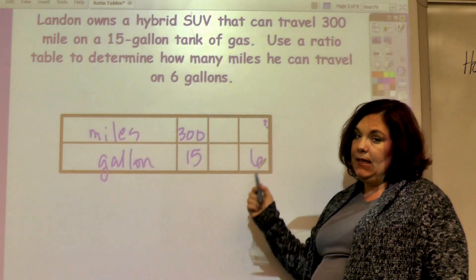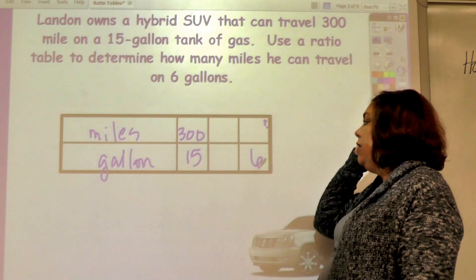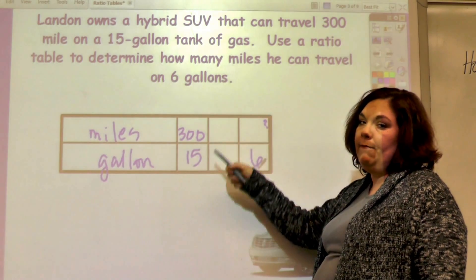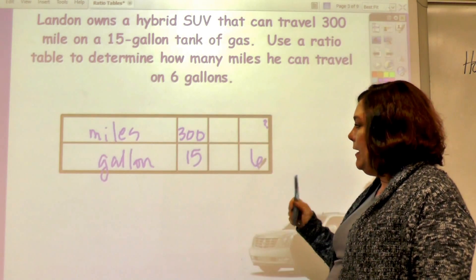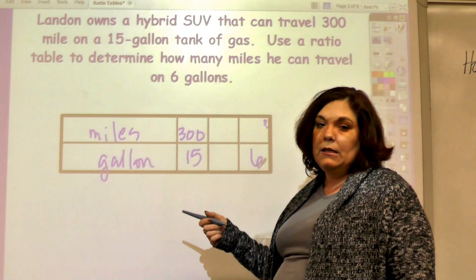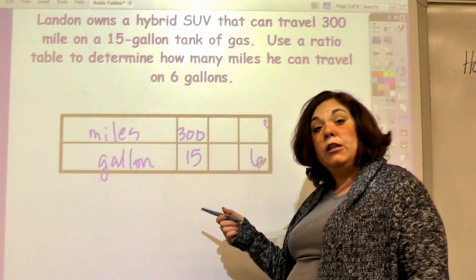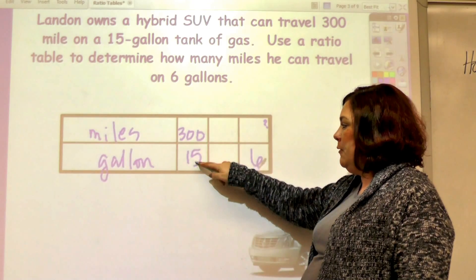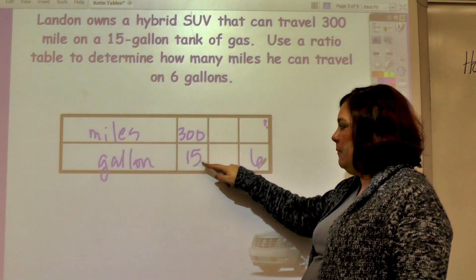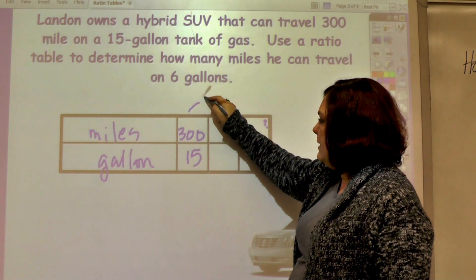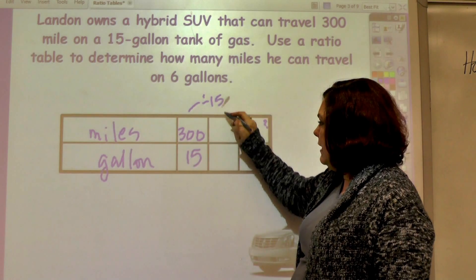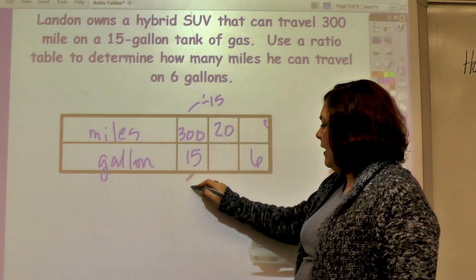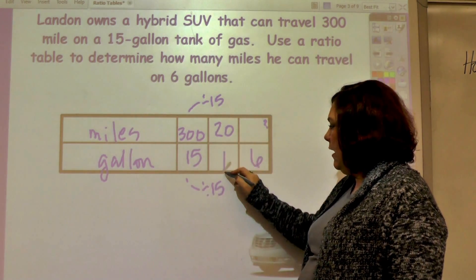I can't go directly from 15 to 6, so I have to simplify before I multiply. With miles and gallons I can usually get a unit rate, miles per gallon. So I'm going to divide 300 by 15.